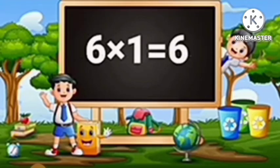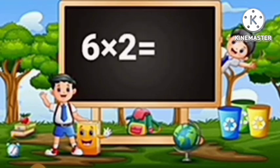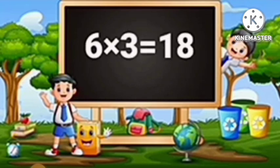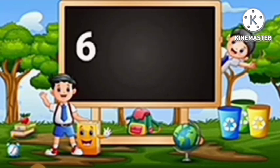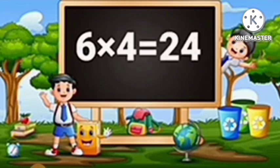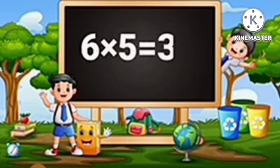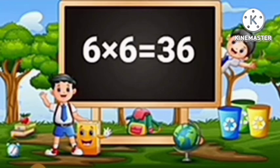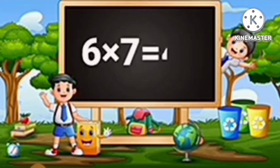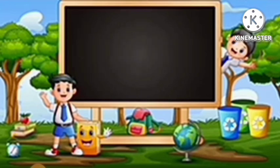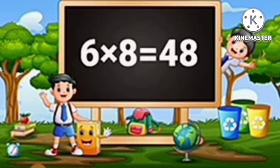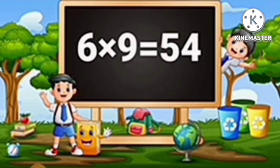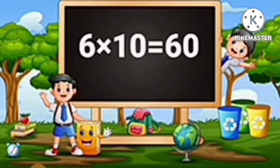Table of Six. Six ones are six. Six twos are twelve. Six threes are eighteen. Six fours are twenty-four. Six fives are thirty. Six sixes are thirty-six. Six sevens are forty-two. Six eights are forty-eight. Six nines are fifty-four. Six tens are sixty.